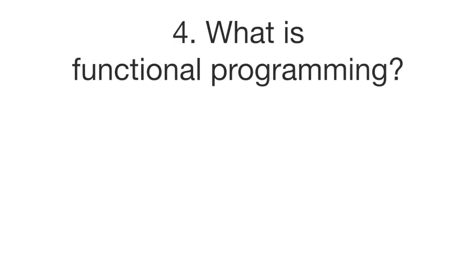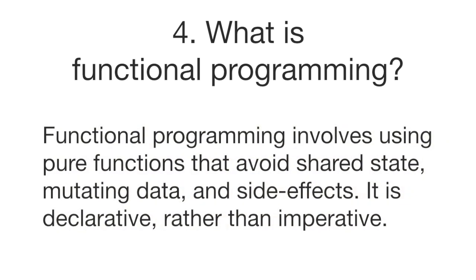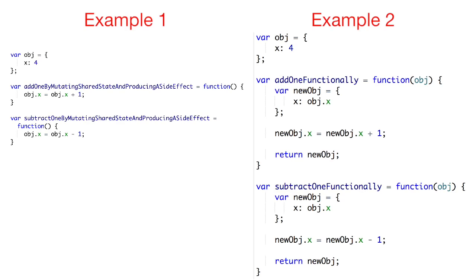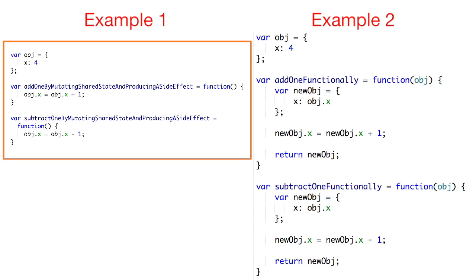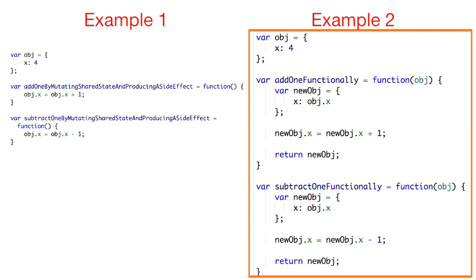Question number four: what is functional programming? Functional programming involves using pure functions that avoid shared state, mutating data, and side effects. It is declarative rather than imperative. In the first example the object has state that is shared with the two functions below, and those functions mutate the object itself, which produces a side effect. Since the functions use state outside of themselves, what they return is unpredictable.